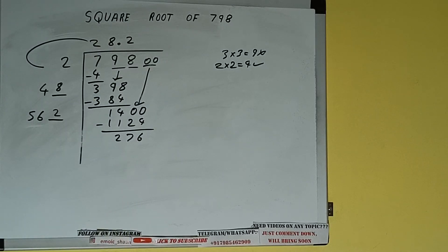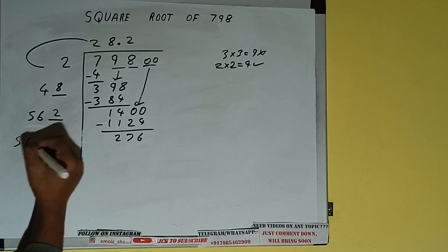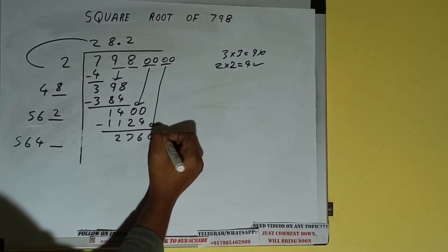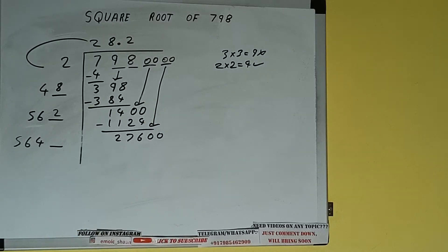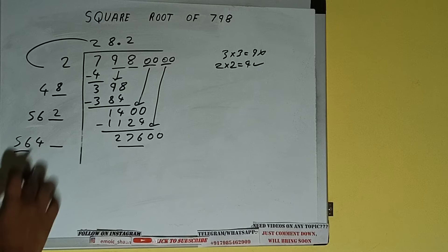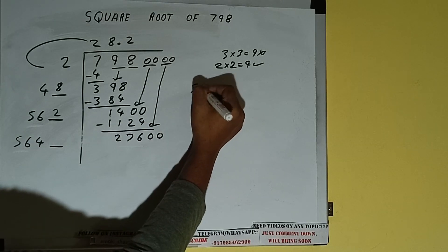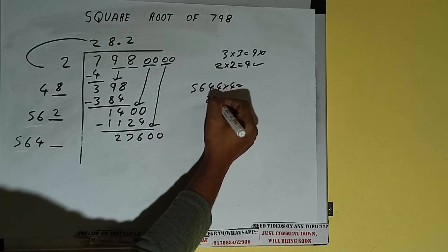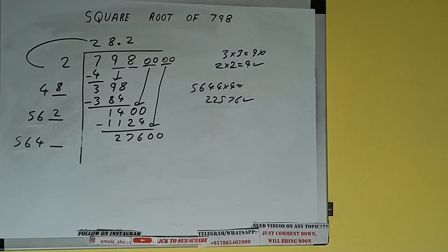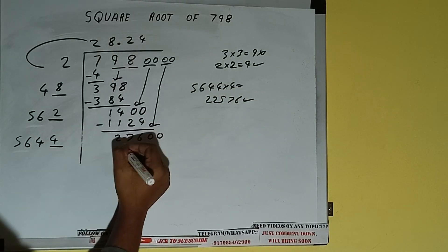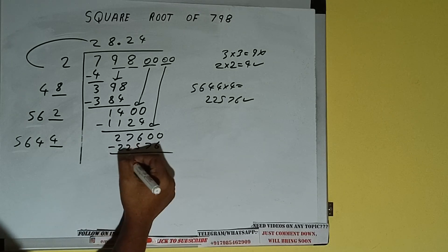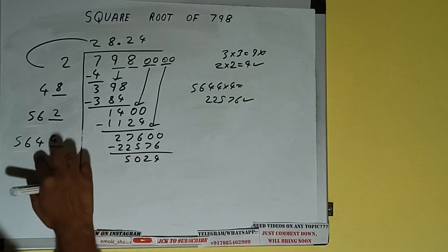562 plus 2 will be 5648 — wait, 562 plus 2 will be 564, and one digit extra. Bring the next pair of zeros down, and it will be 27600. Compare 56 and 276: 56 times 5 is 280, so we cannot try 5 times. We have to try 4 times. 564×4 = 2256, actually 22576, which is good to take. So write 4 here and 4 here.